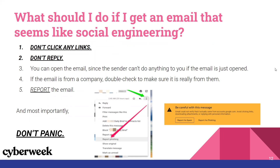If you get an email that looks like social engineering, keep in mind that clicking any links will increase the chance of harm to your computer. So stay away from any links, and to be safe, don't click anything. Also don't reply — this will let the sender know that the email is live and that they're actually reaching a potential person. Opening the email won't do anything, but just make sure to steer clear of clicking anything or replying.